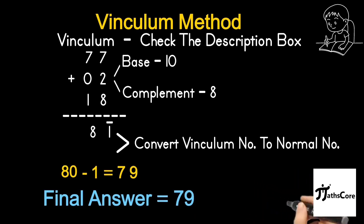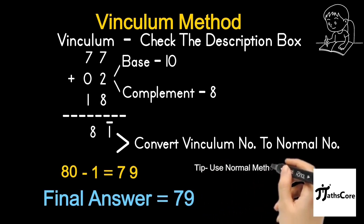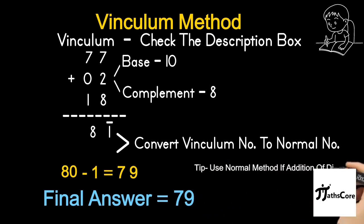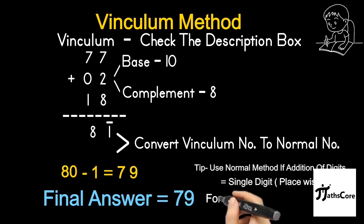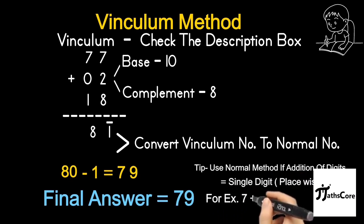Here I will recommend you don't use this method if you have such kind of example in which place-wise addition of digits is equal to a single digit, just like 7 plus 2 is 9, which is a single digit, or 6 plus 2 is 8, that is a single digit. Then use the normal method of addition because by using the normal method you will get the answer easily.